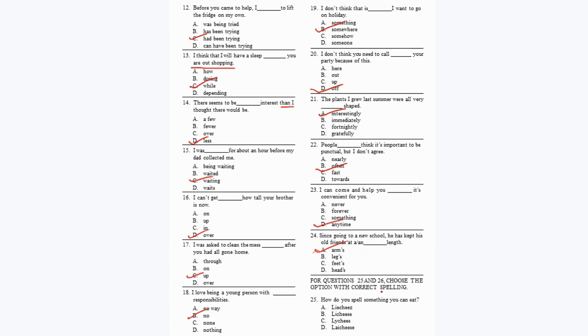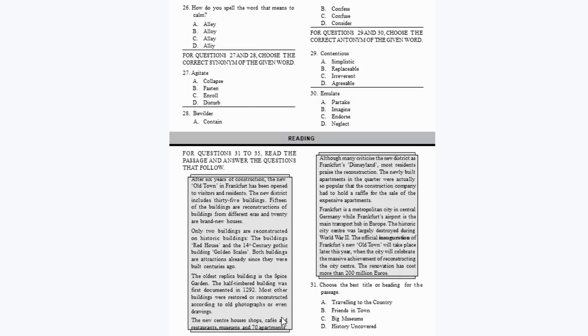For questions 25 and 26, choose the option with the correct spelling. Question 25: How do you spell 'lychee'? Although the pronunciation sounds like 'lighties,' the correct spelling is option C: L-Y-C-H-E-E. Question 26: How do you spell the word that means 'to come'?